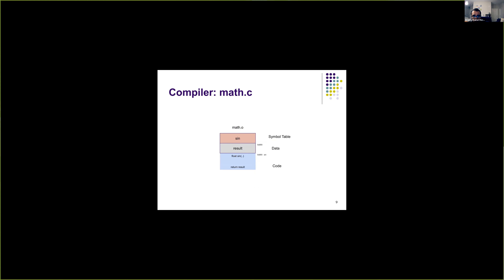Similarly, if you look at the object file of math.c, you see the same structure. Since the sin function doesn't call any external functions, there are no relocation records. However, the symbol table contains one entry — sin — indicating that this object file has the function sin defined.